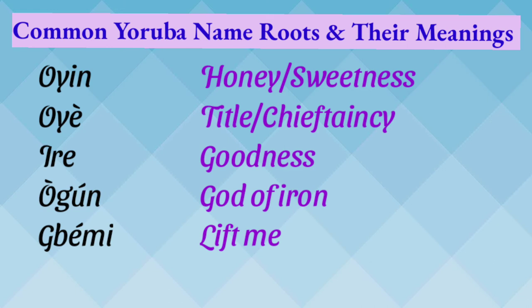Another set of noun roots: Oyi means only. Oni represents sweetness. Oye is title or chieftaincy — any title, whether kingship or otherwise. Ire is goodness. Ogu is the god of iron. Bami means 'lift me.'